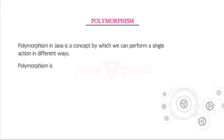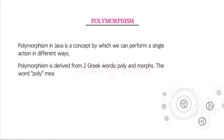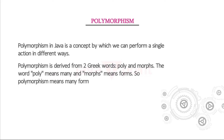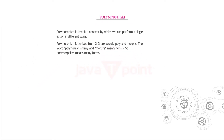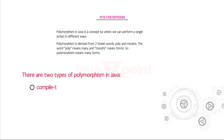Polymorphism is derived from two Greek words: poly and morphs. The word poly means many and morphs means forms. So polymorphism means many forms. There are two types of polymorphism in Java: compile time polymorphism and runtime polymorphism.